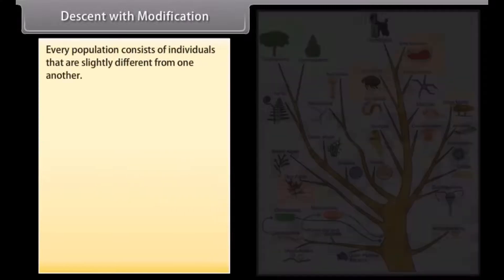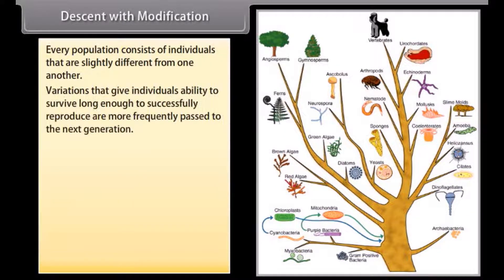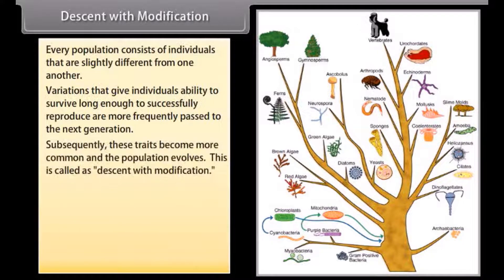Every population consists of individuals that are slightly different from one another. Variations that give individuals the ability to survive long enough to successfully reproduce are more frequently passed to the next generation. Subsequently, these traits become more common and the population evolves. This is called descent with modification.